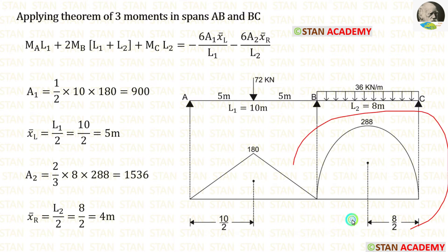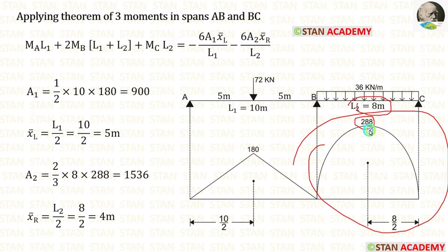For this parabola, the breadth is 8 meters and the height is 288. We can apply these values and finally we are getting 1536.